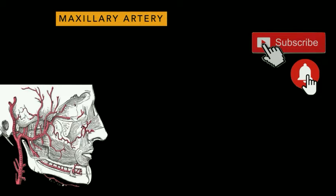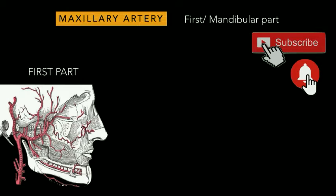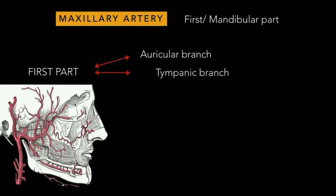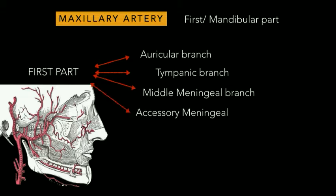The three parts are the mandibular part, the pterygoid part, and the pterygopalatine part. The first part of the maxillary artery runs horizontally between the neck of the mandible and the sphenomandibular ligament, and gives out these branches: the auricular branch, tympanic branch, middle meningeal branch, accessory meningeal branch, and the inferior alveolar branch.